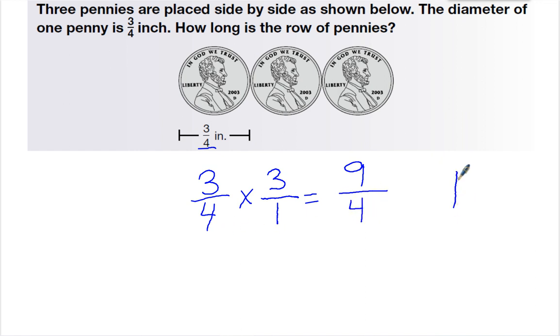To make this a mixed number, I take nine and divide it by four. Four goes into nine two times. Four times two is eight. Subtract. One left over. So it's two and one-fourth of an inch.